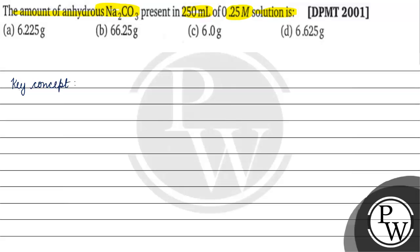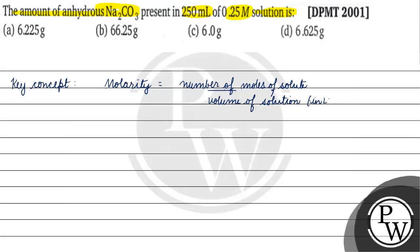Molarity is basically equal to number of moles of solute by volume of solute in liters. So what do we want to find in this question — amount of anhydrous Na2CO3. We have molarity and volume given.